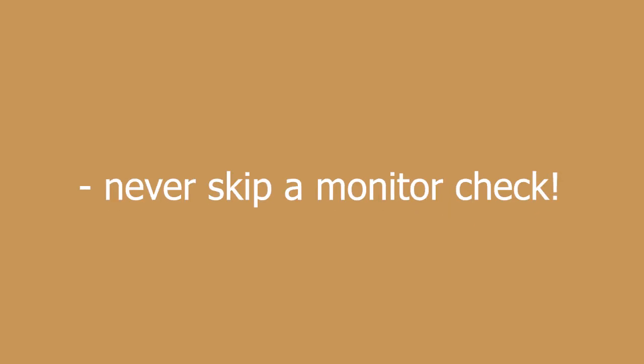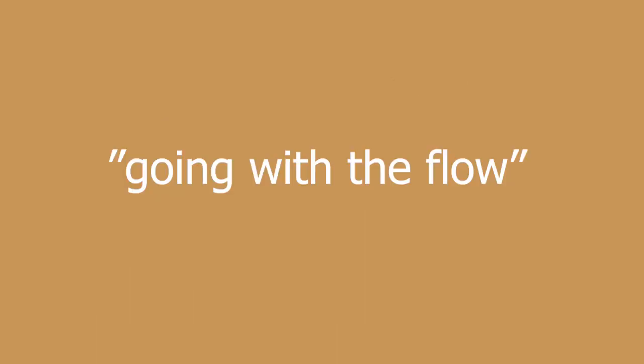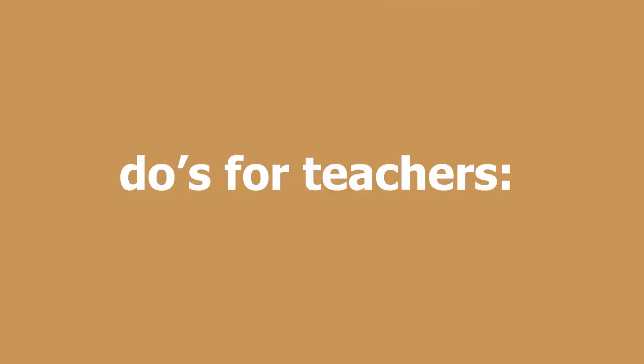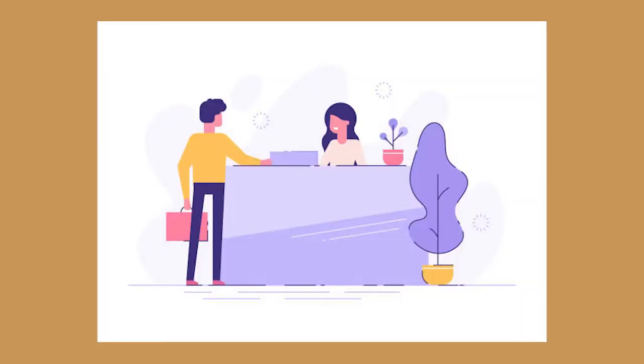Some don'ts for managers include assuming everything is okay and skipping a monitor check, isolating yourself from your employees, going with the flow when a small problem arises, and trying to do everything yourself because you think you're the only one who can do it right. The do's for teachers include updating traditional lessons if needed, maintaining communication with students and groups during projects, monitoring risk by checking in on group leaders, having benchmarks to demonstrate each student's progress, and having a criteria made on assignments to evaluate student work and efforts.